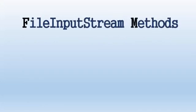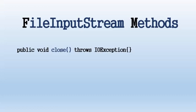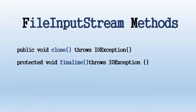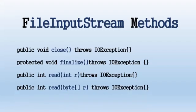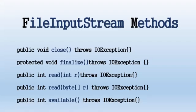Input stream methods: once you have an input stream object, there are a list of helper methods that can be used to read the stream. The close method closes the file output stream and releases any system resources associated with the file. The finalize method cleans up the connection to the file and ensures that the close method is called when there's no more reference to this stream. The read method reads a specified byte of data from the input stream. Another read method reads a given length of bytes from the input stream into an array and returns the total number of bytes read. The available method gives the number of bytes that can be read from this FileInputStream and returns it as an int.